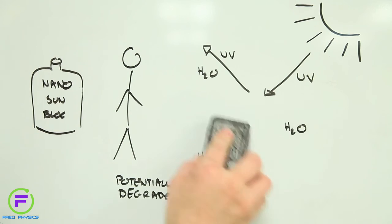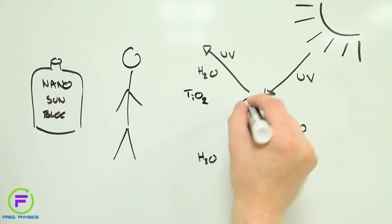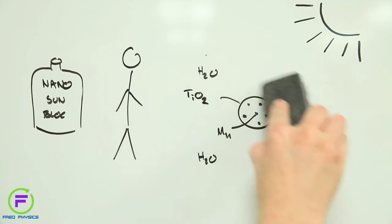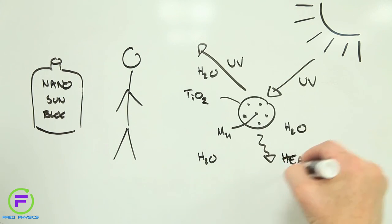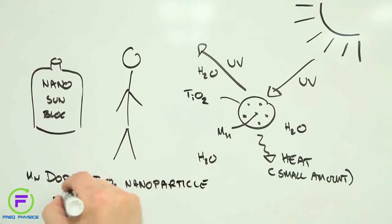To overcome this problem, one company engineered their sunscreen nanoparticles to be safe by design by adding small amounts of the metal manganese. The result was highly effective UV protection without the production of harmful free radicals. Something that was only possible because of a combination of materials design know-how and health risk smarts.